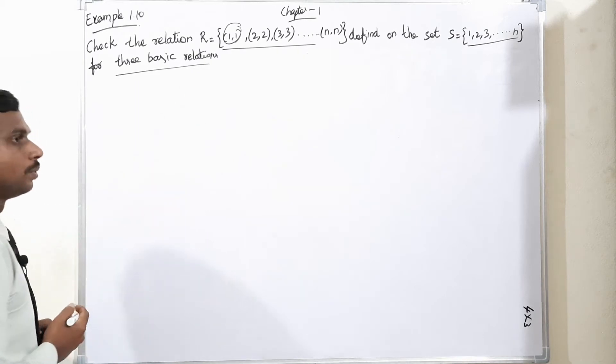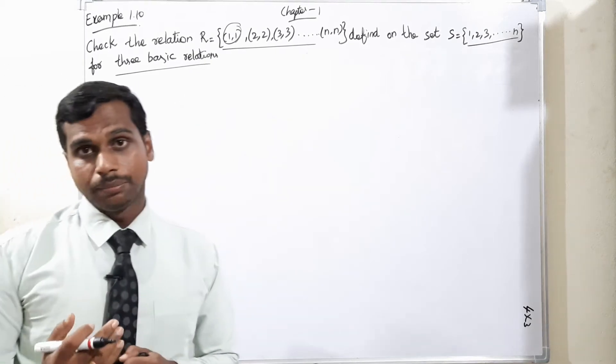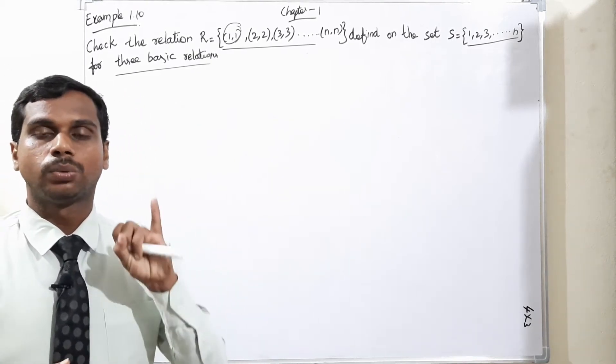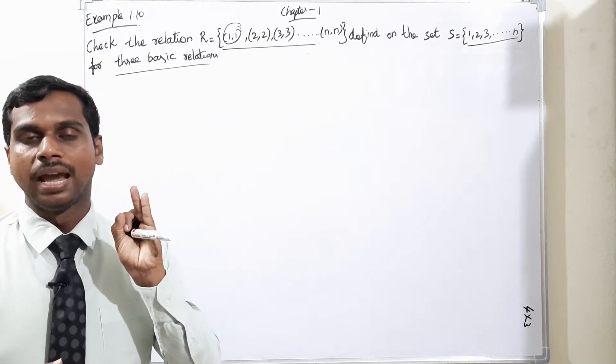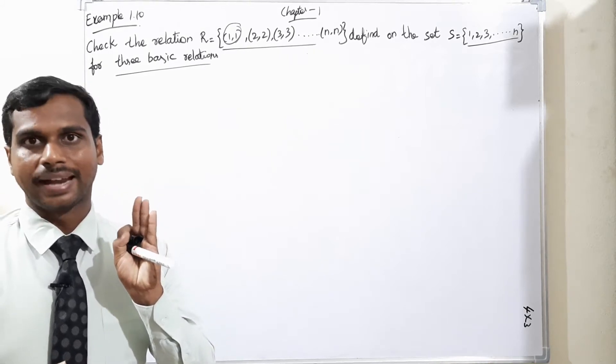Three basic relations. We already know what is the meaning of three basic relations. First one is reflexive, second one is symmetric, third one is transitive.